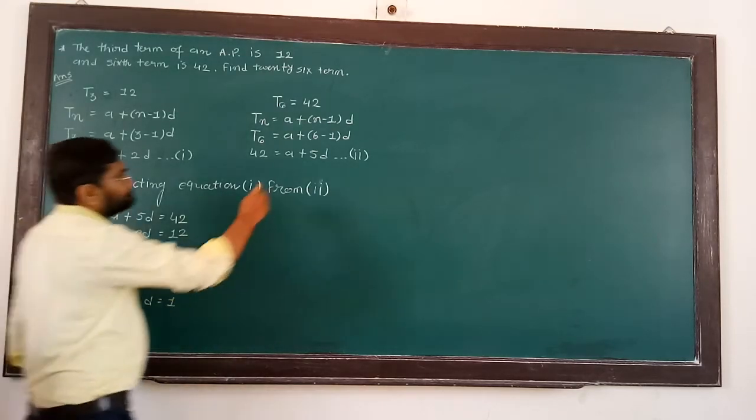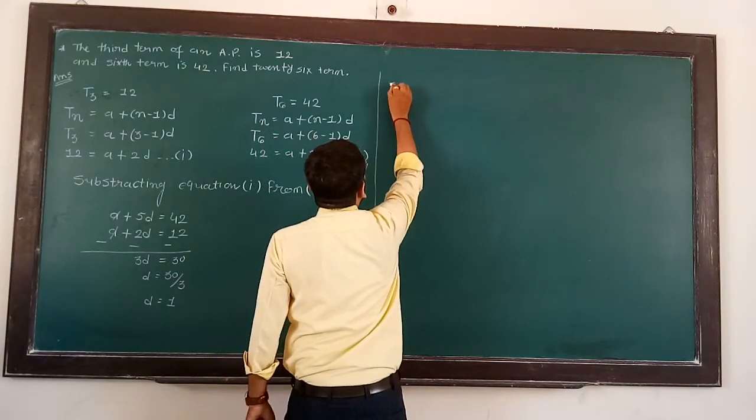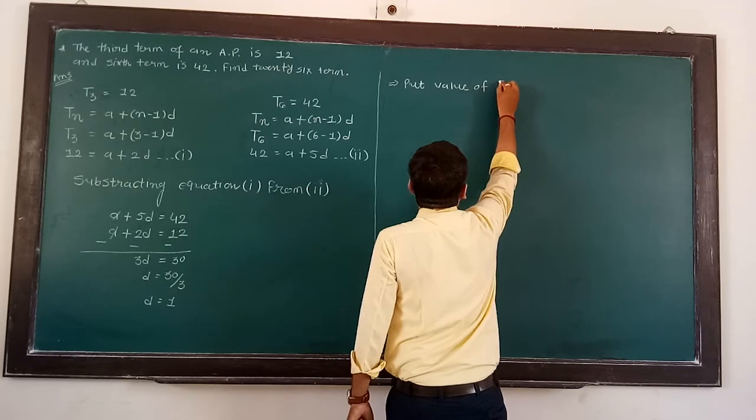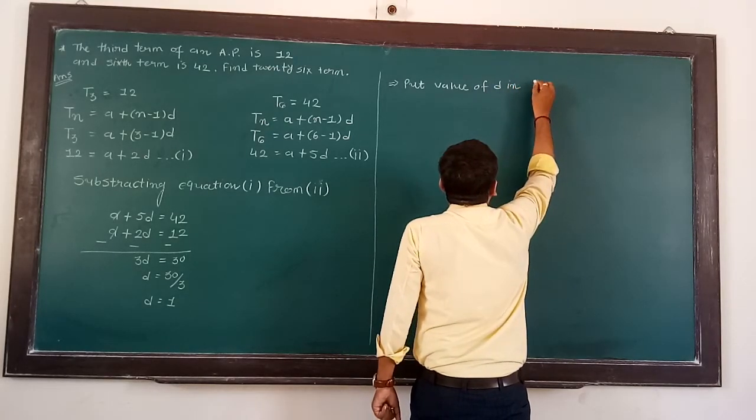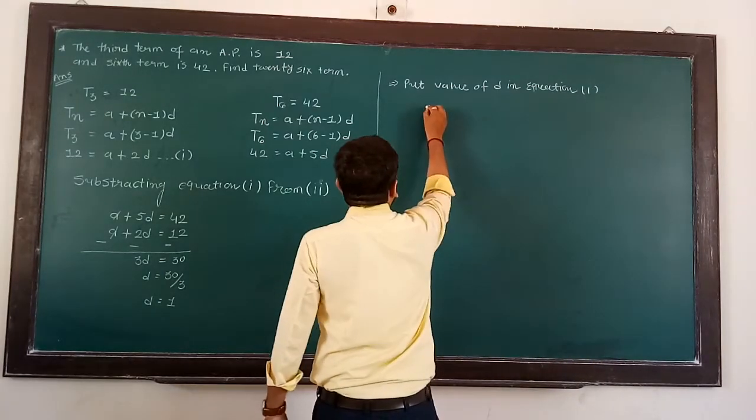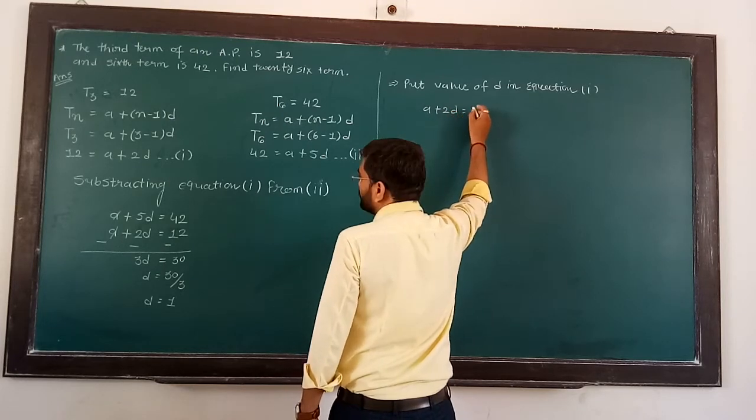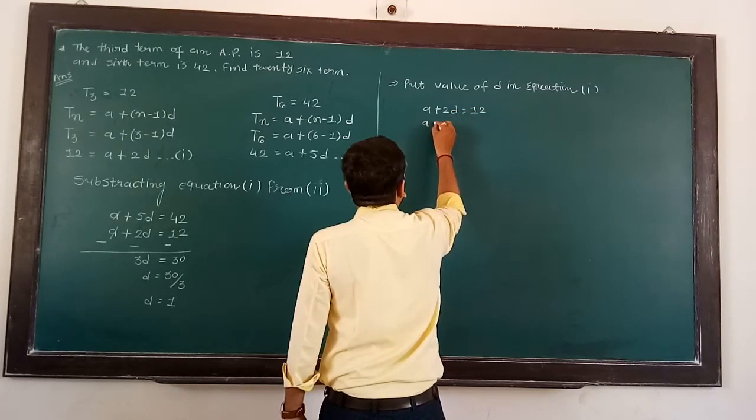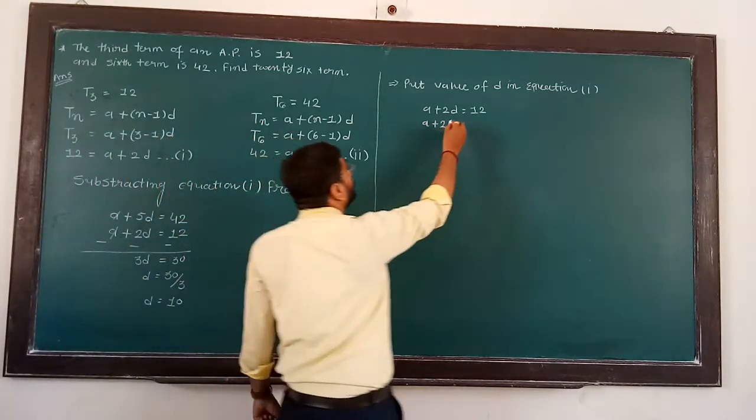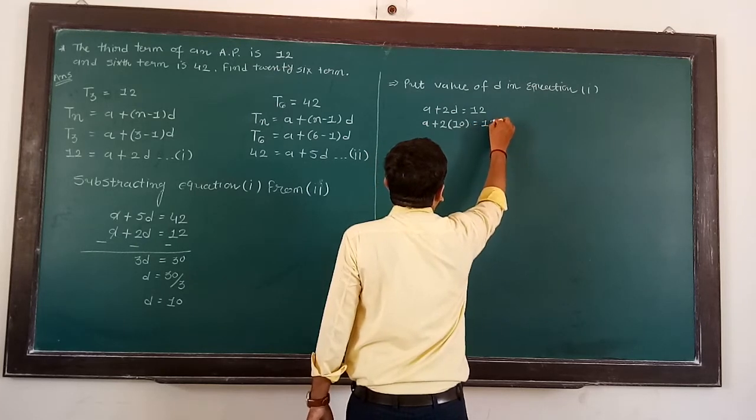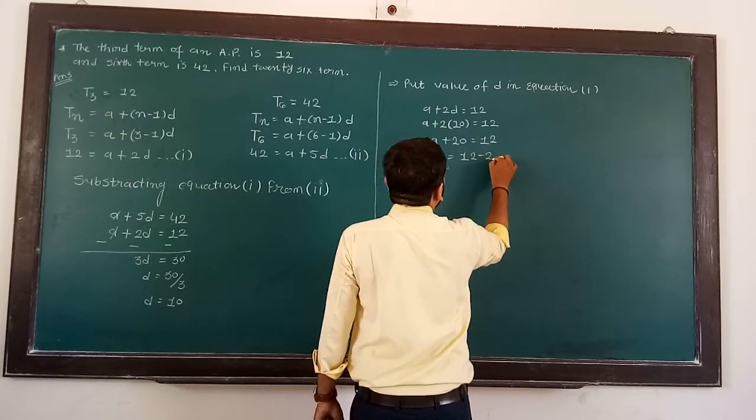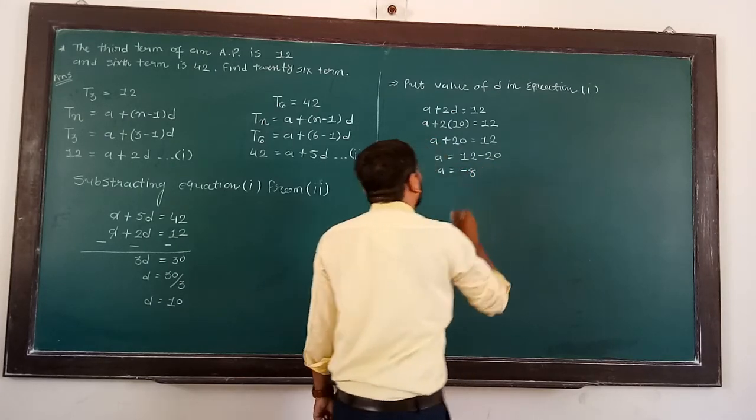Now put the value of D in equation number 1. So here we write A plus 2D is equal to 12. So A plus 2 into 10 is equal to 12. So A is equal to 12 minus 20, A is equal to minus 8.